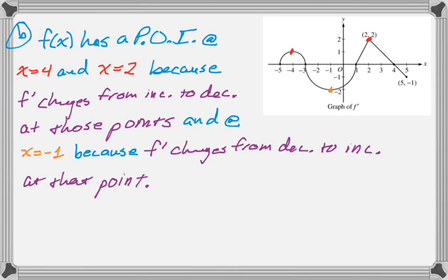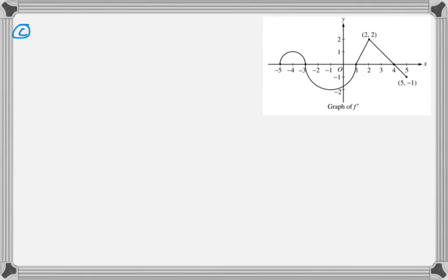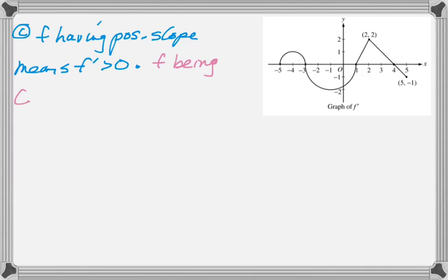Let's move on to part c. We want to find the intervals where f of x has a positive slope and is concave up. A positive slope means that the derivative is positive, because the derivative is the slope. And f being concave up means that the derivative is increasing.